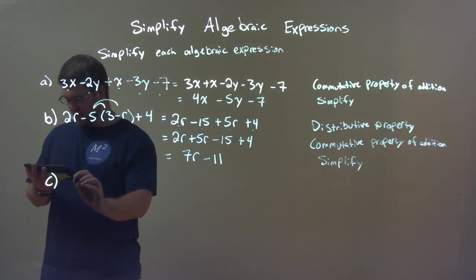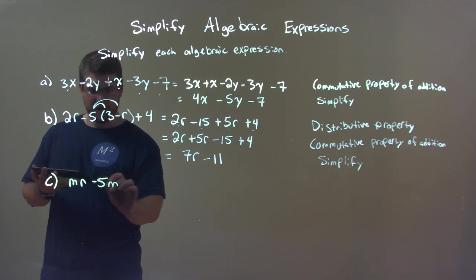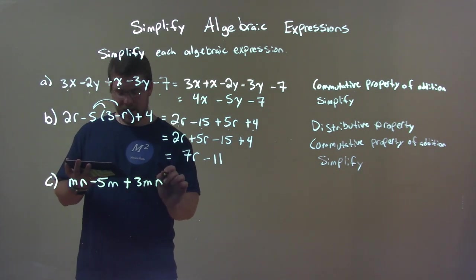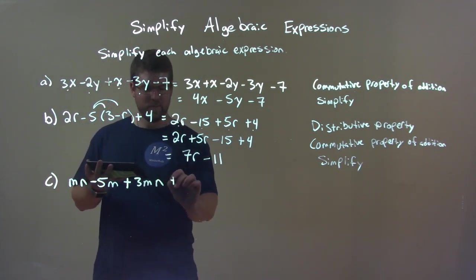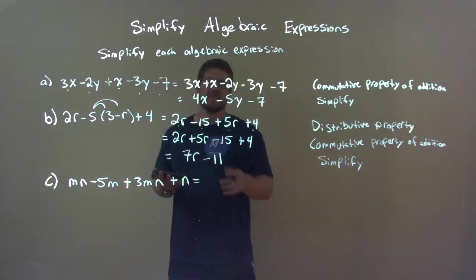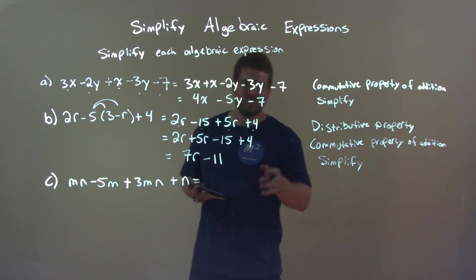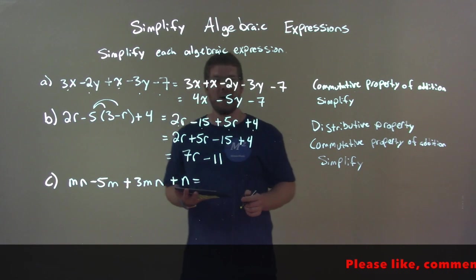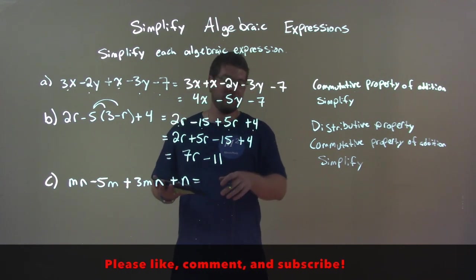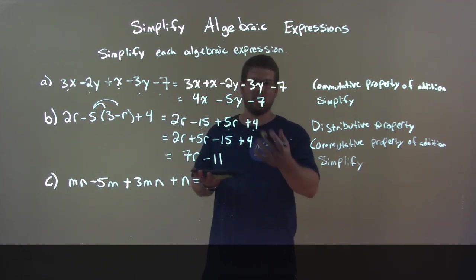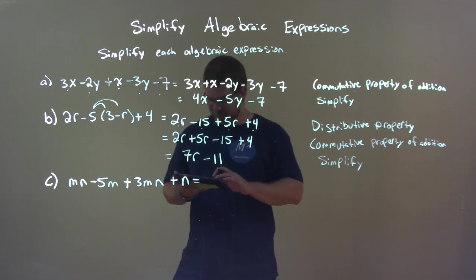We got c here. mn minus 5m plus 3mn plus n. Okay. So again, pause this video. See if you can do it yourself. And then resume and see if we can compare answers. Alright? And while you're doing that, don't forget to subscribe and like this channel. And even comment down below. Or like the video and comment below. These things help us make more videos and help make more free lessons for you. So thanks for your help.